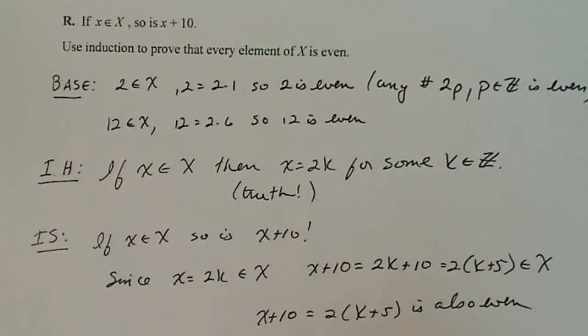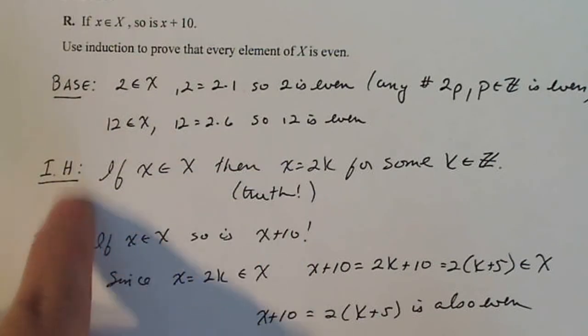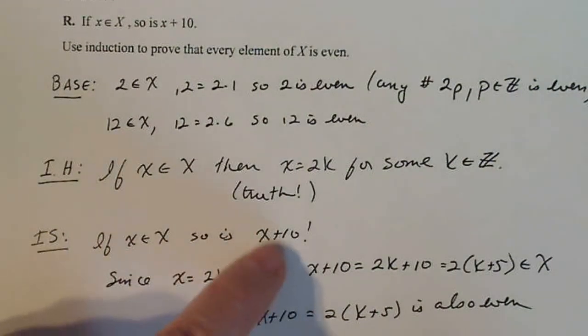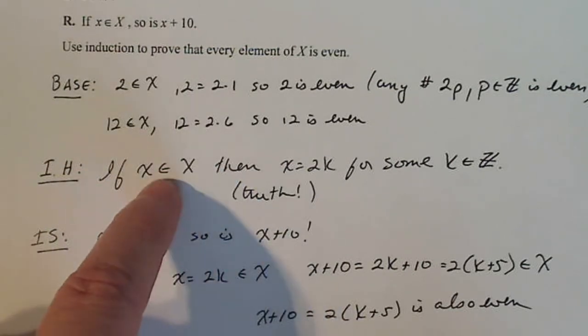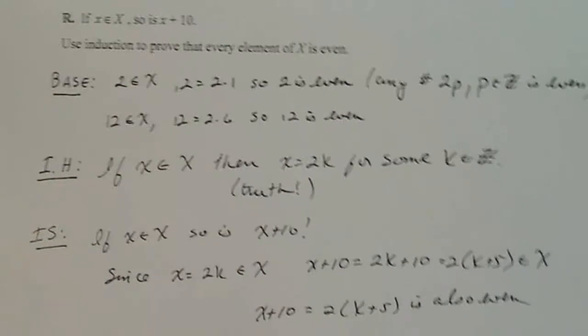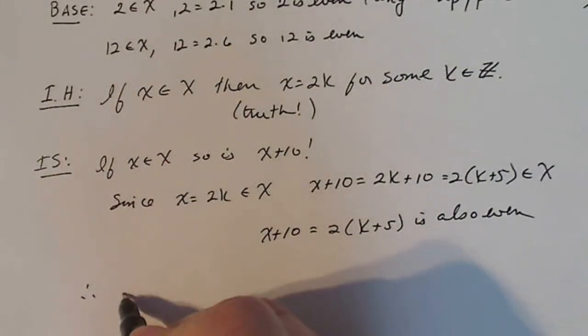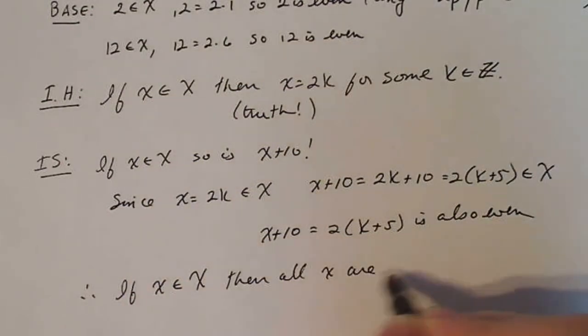So what I've done here is I've taken a random element of X and stated that it's even, and that's my inductive hypothesis based on what I have stated right here. So I'm taking any another element that I know is possible and showing that it's even. So that means that if I have an element in X, assuming it's even, every other element in X is going to be even. So I can say here, therefore, if x is an element in the set X, then all elements are even.